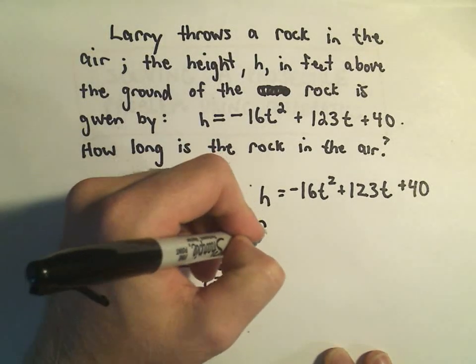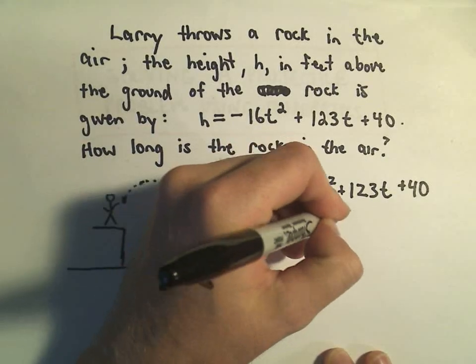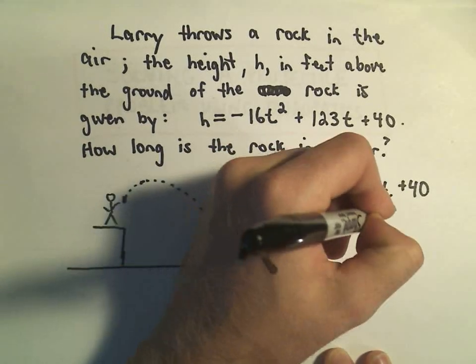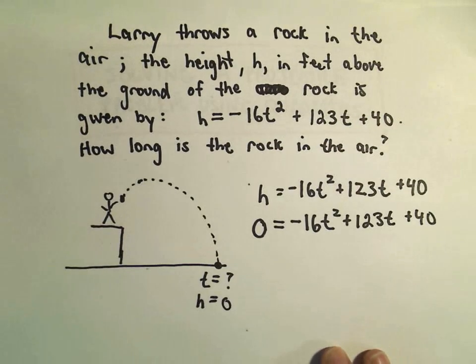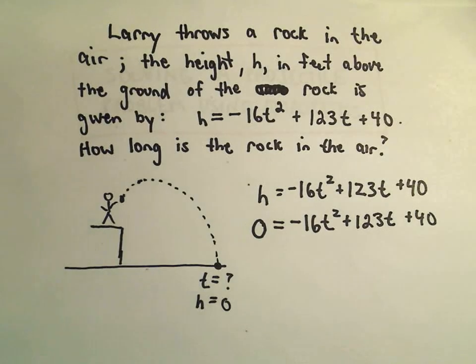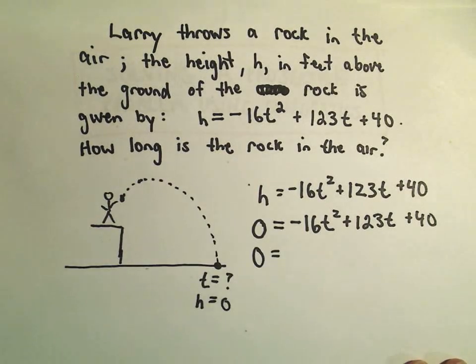So all we do is just replace the h with 0 and now we have a nice little quadratic equation that we can try to solve. Okay, again, two ways to do this. You can either use the quadratic formula. I think I can factor this. I'm going to play with it here. So let's see.